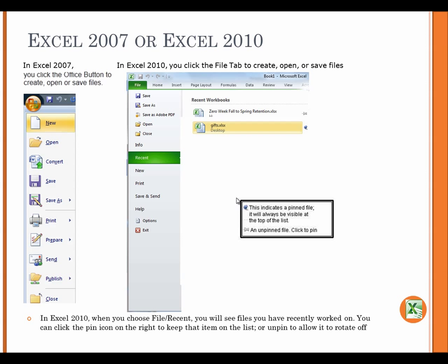Excel 2007 or Excel 2010. In Excel 2007, you click the Office button to create, open, or save files. In Excel 2010, you click the File tab to create, open, or save files.